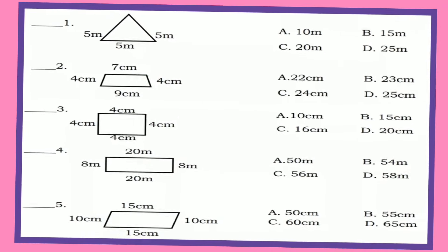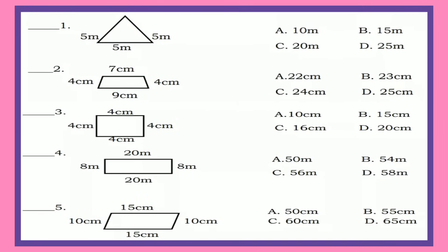It's time to test yourself — choose the correct perimeter of the following figures. Let's now check your work. Number 1, the perimeter is letter B, 15 meters. Number 2, letter C, 24 centimeters. Number 3, letter C. Number 4, letter C, 56 meters. And Number 5, letter A, 50 centimeters.